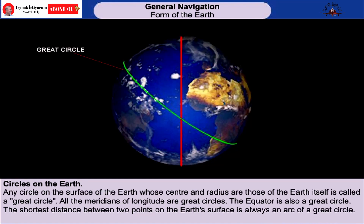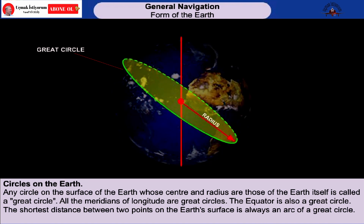A circle on the surface of the Earth, whose center and radius are those of the Earth itself, is called a great circle. It's called great because a disc cut through the Earth in the plane of the great circle would have the largest area that can be achieved.